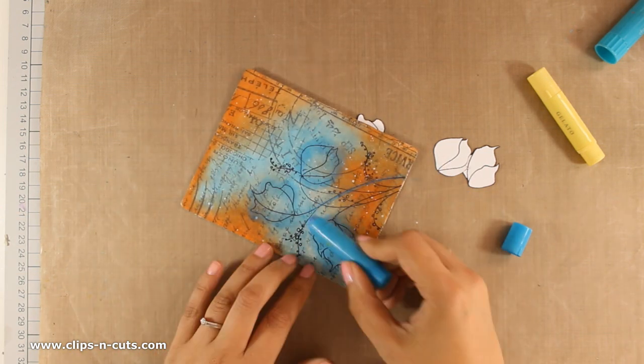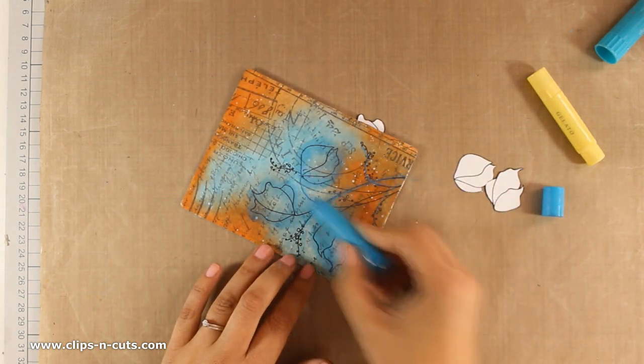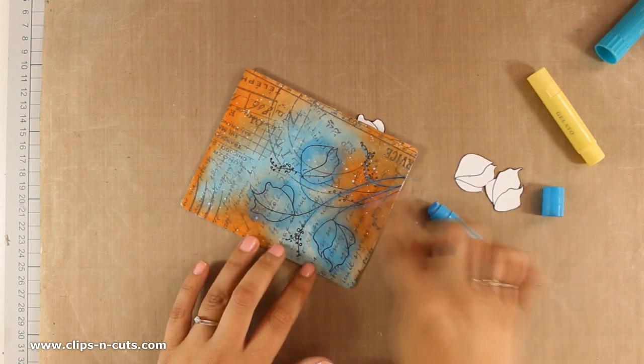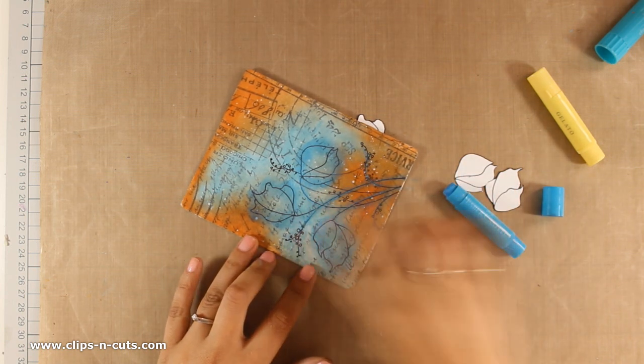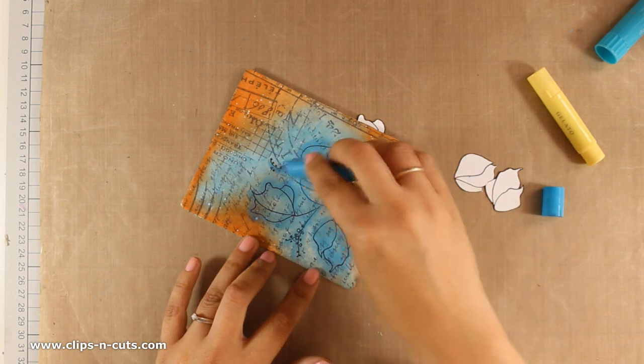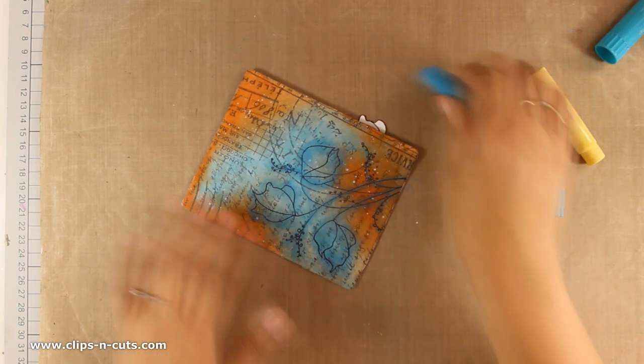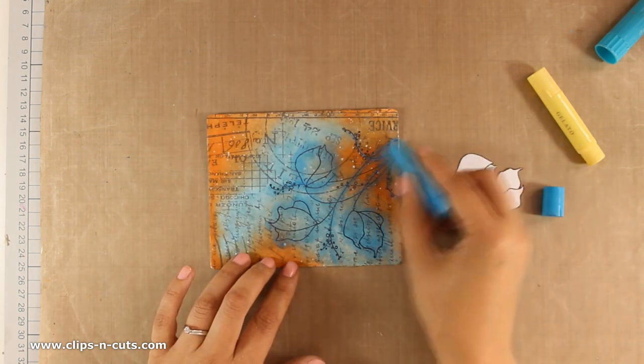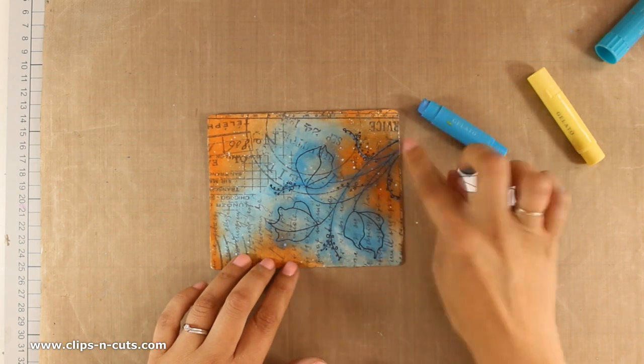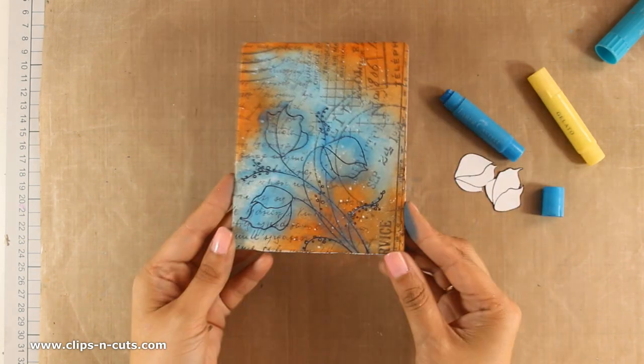I am going to add a little bit of shadow to the stems as well. I follow the lines with my gelato and then smudge it with my finger. Now I am happy with my shadows, so I can move on and work on the flowers.